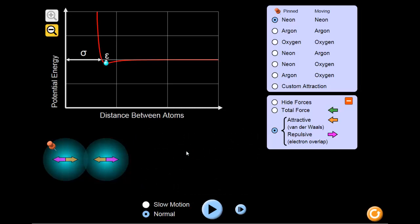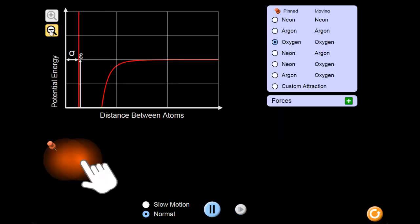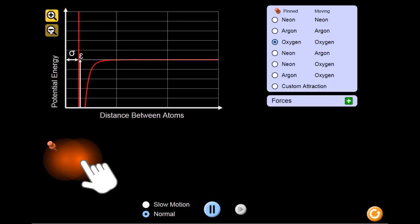Now that we've taken a look at two neon atoms, we'll take a look at two oxygen atoms. Since the oxygen graph actually exceeds the scale of the graph we had before, we'll zoom out on it so the whole picture can be seen.